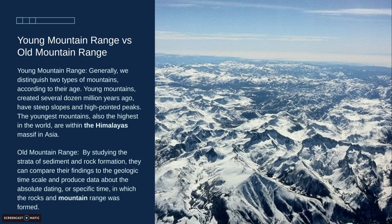Old mountain range. By studying the strata of sediment and rock formation, they can compare their findings to the geologic timescale and produce data about absolute dating, or the specific time in which rocks and mountain ranges formed. So old mountain ranges have lower, softer slopes and are not high and don't have sharp peaks. But young mountain ranges are really high with big peaks. Here there's an example of an old mountain range.